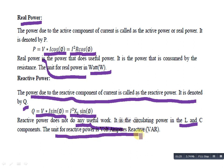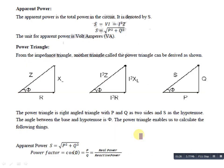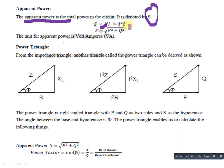The next is apparent power. Apparent power is the total power in the circuit. It is denoted by S. S equals V into I, or equivalently I squared times Z, since voltage equals current times impedance. It is also expressed as S equal to the square root of P squared plus Q squared. The unit of apparent power is volt-ampere.